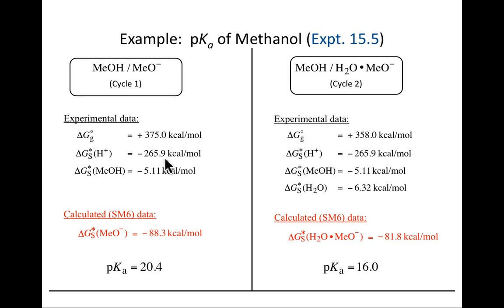I told you it was 264 on a different slide, and that is because the standard state change of going from one atmosphere to one molar was in that number—it's not in this number. Then the free energy of solvation of methanol minus 5.11. Add those all together with the methoxide computed free energy of solvation, you get a pKa of 20.4. These are all experimental data. This is the only variable, but apparently it's in significant error because we get a pKa of 20.4 instead of 15.5. We're off by five pKa units.